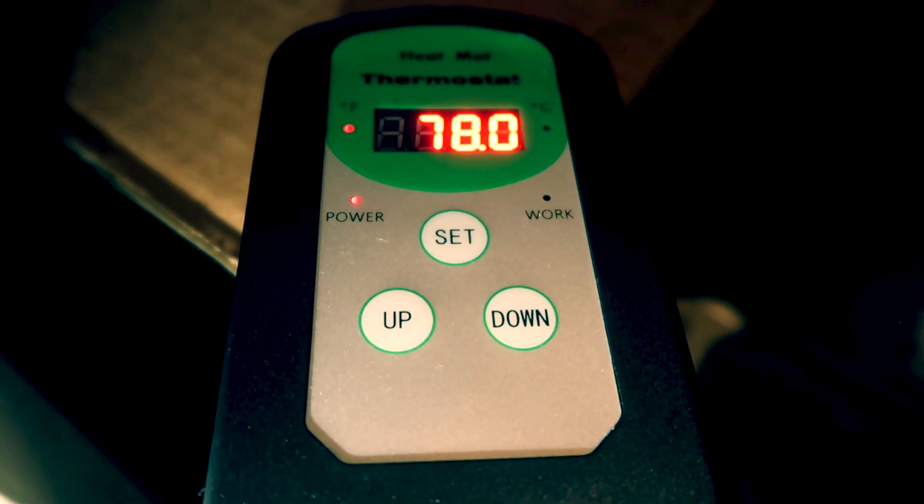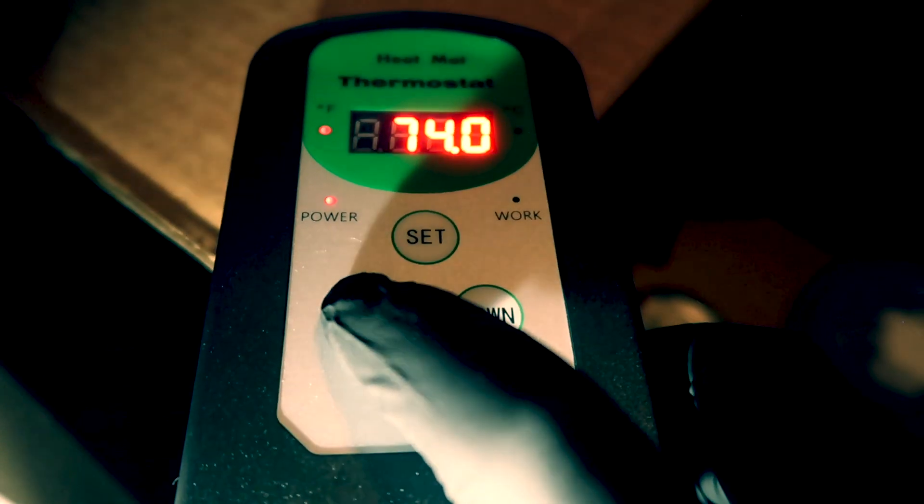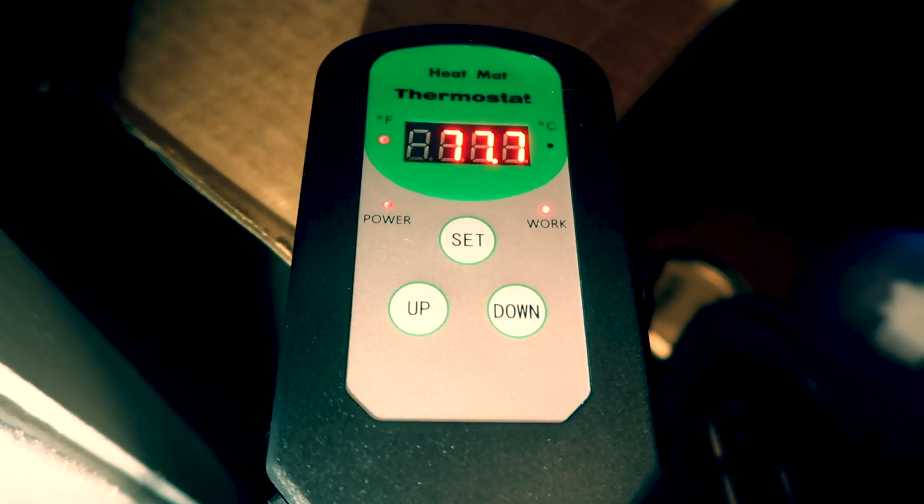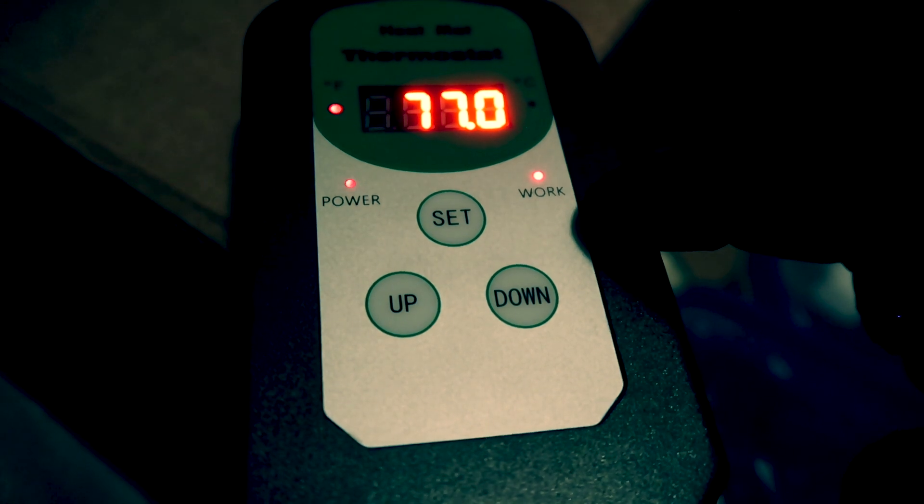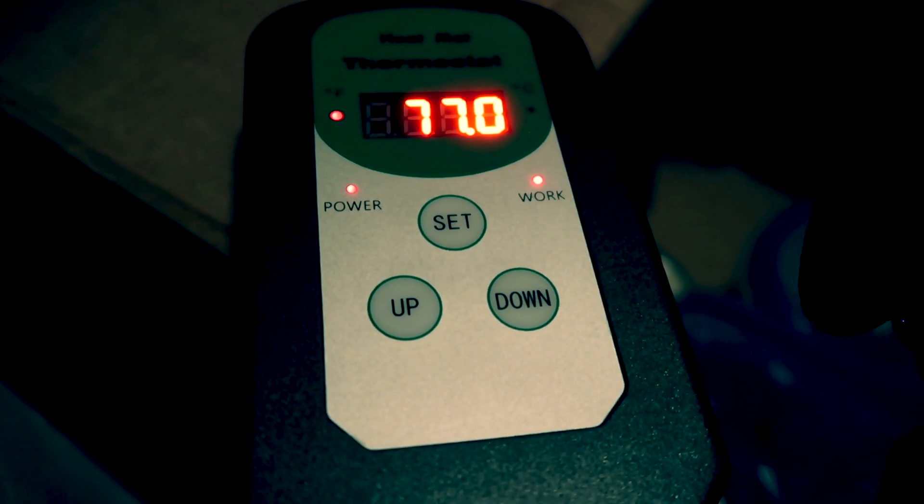If I hold down set for three seconds I can now change my cutoff temperature to 80 degrees Fahrenheit, press set again, now it's all ready to go. You can see the work light is on, power light is on. The work light means that the heating mat is heating up right now. So when that turns off that means it's reached the desired temperature inside.